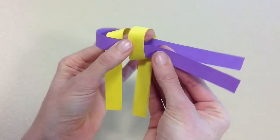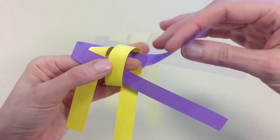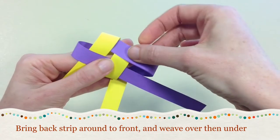It may be easier now to take out one finger. Bring back strip around to front and weave over then under.